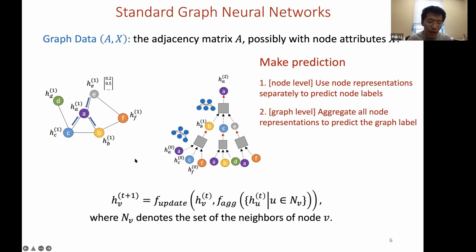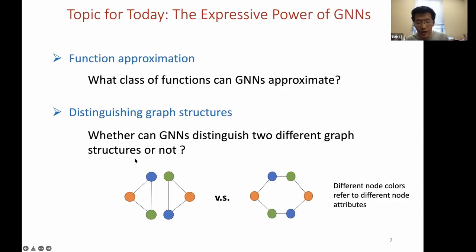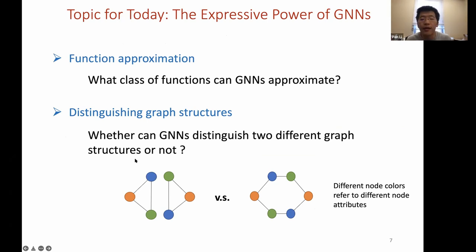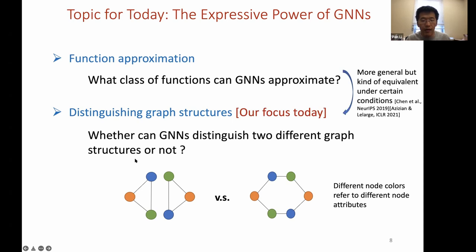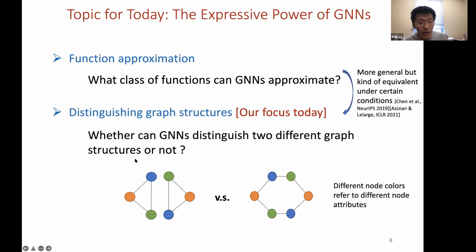We can get final node representations to make predictions. We consider two types of predictions: node-level prediction, where we use a single node representation to predict its label, and graph-level prediction, where we aggregate all node representations to predict the graph's label. For today's discussion, we study the expressive power of GNNs. There are two research questions: function approximation — what class of functions can a GNN approximate — and distinguishing graph structures.